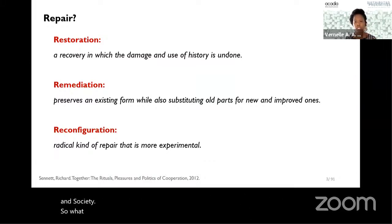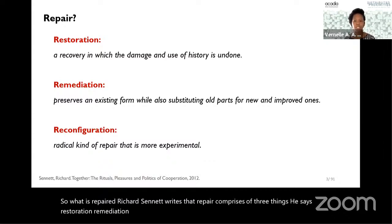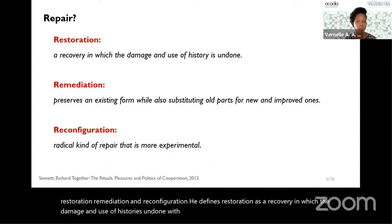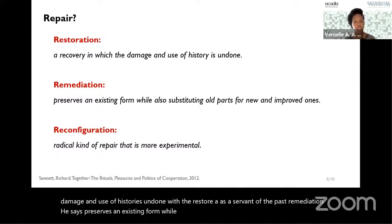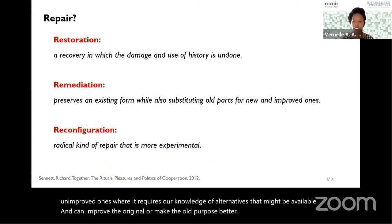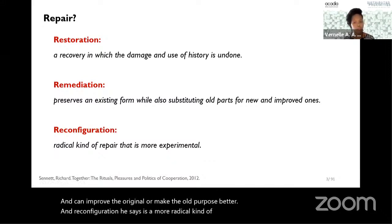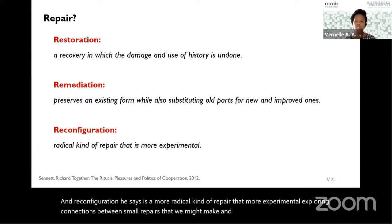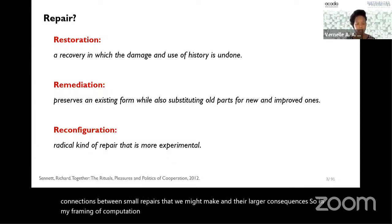What is repair? Richard Sennett writes that repair comprises three things: restoration, remediation, and reconfiguration. He defines restoration as a recovery in which the damage and use of history is undone. Remediation preserves an existing form while substituting old parts for new and improved ones, requiring knowledge of alternatives that might improve the original. Reconfiguration is a more radical kind of repair that's more experimental, exploring connections between small repairs and their larger consequences. In my framing of computation, I investigate computation as a method or approach to repairing practices, pedagogy, and publics.